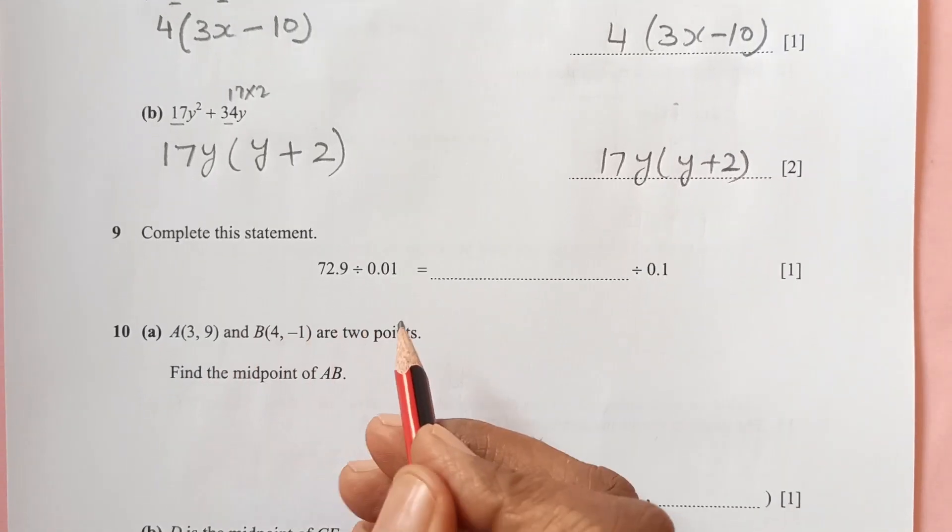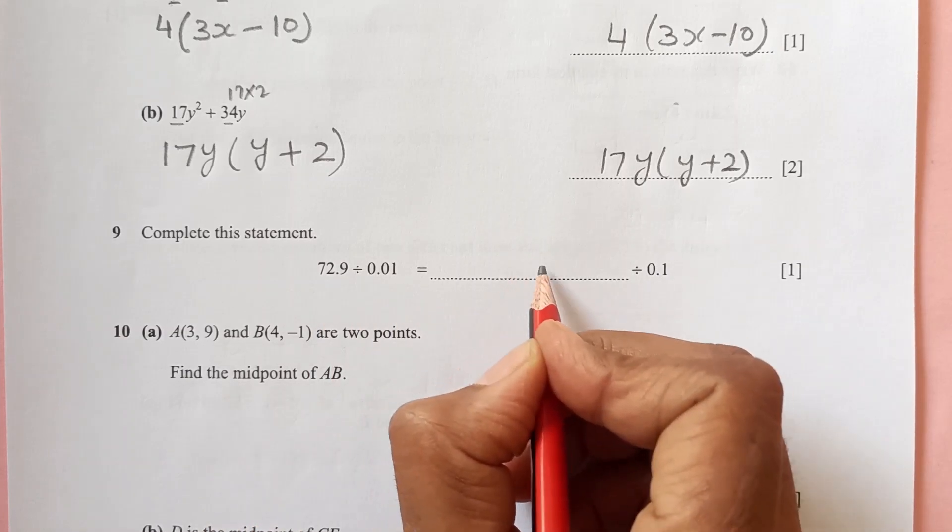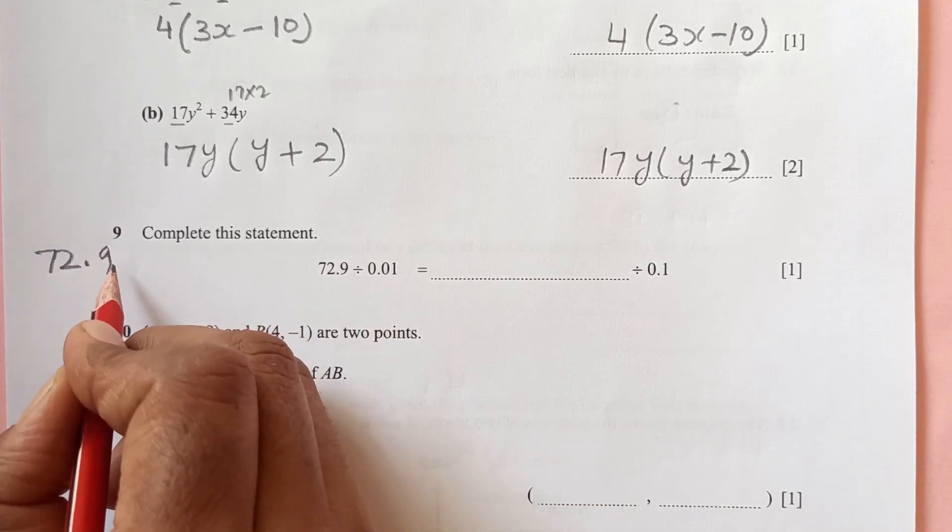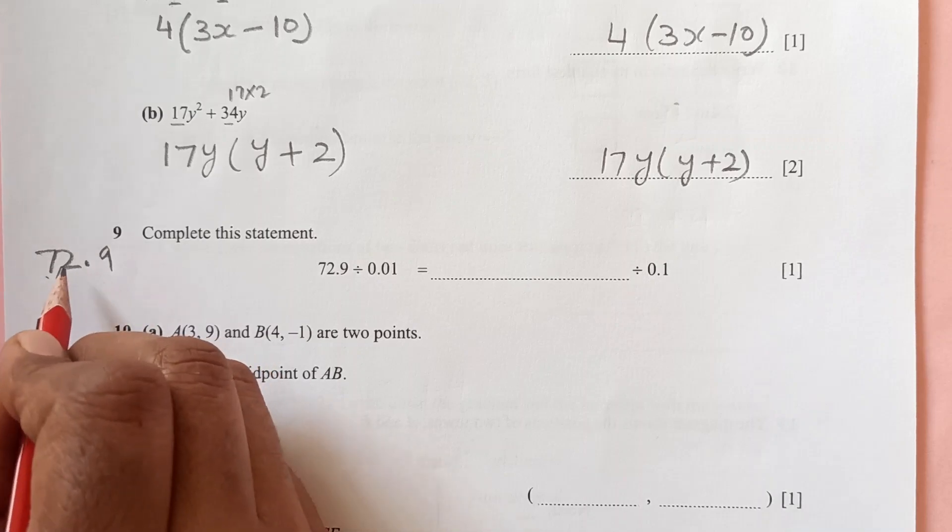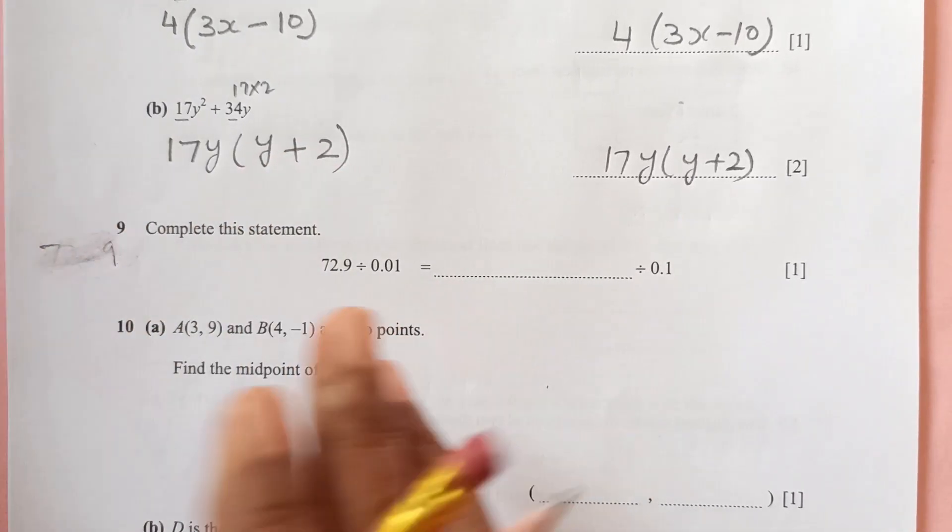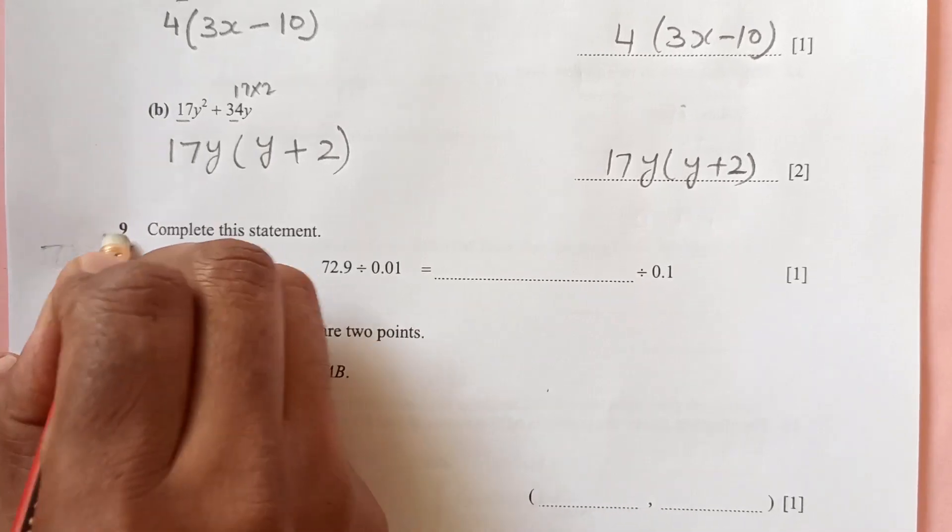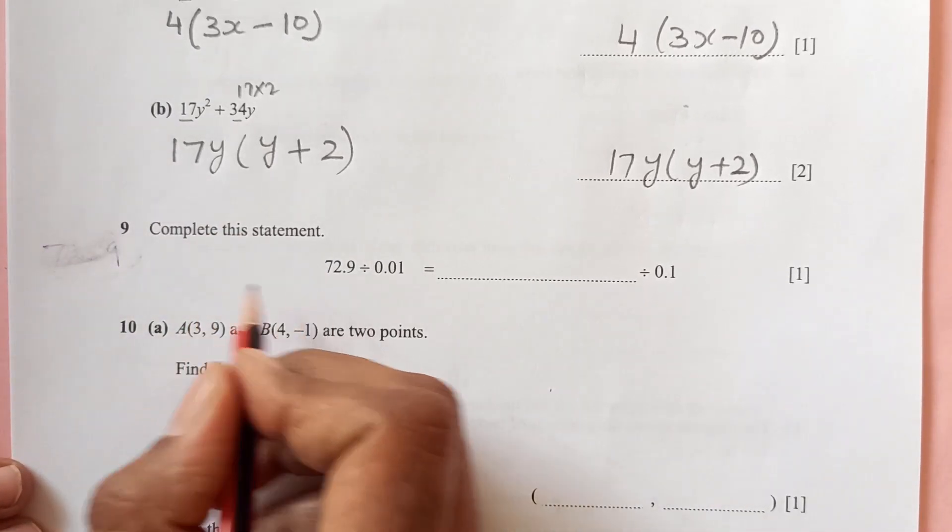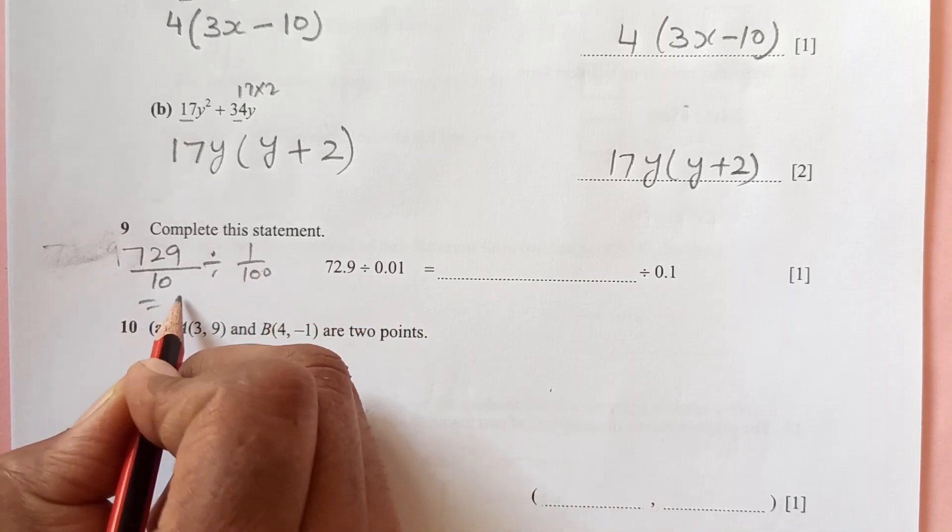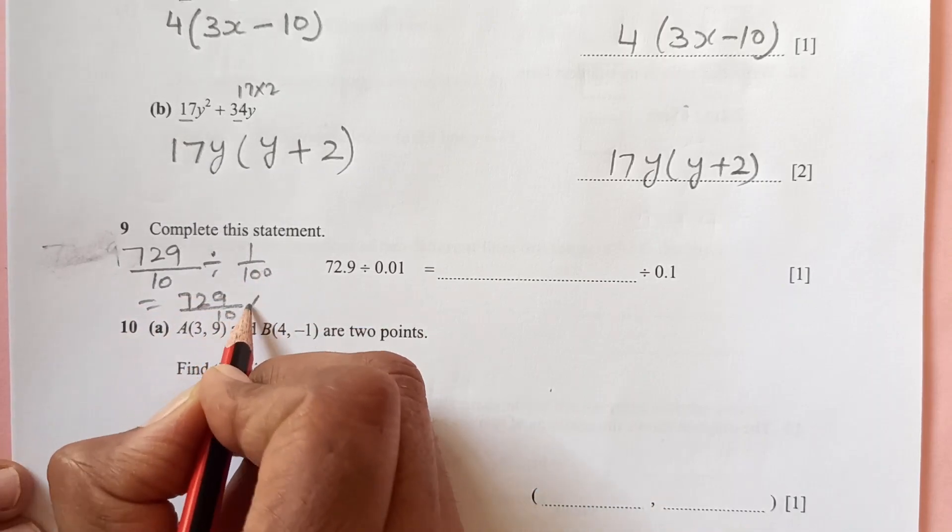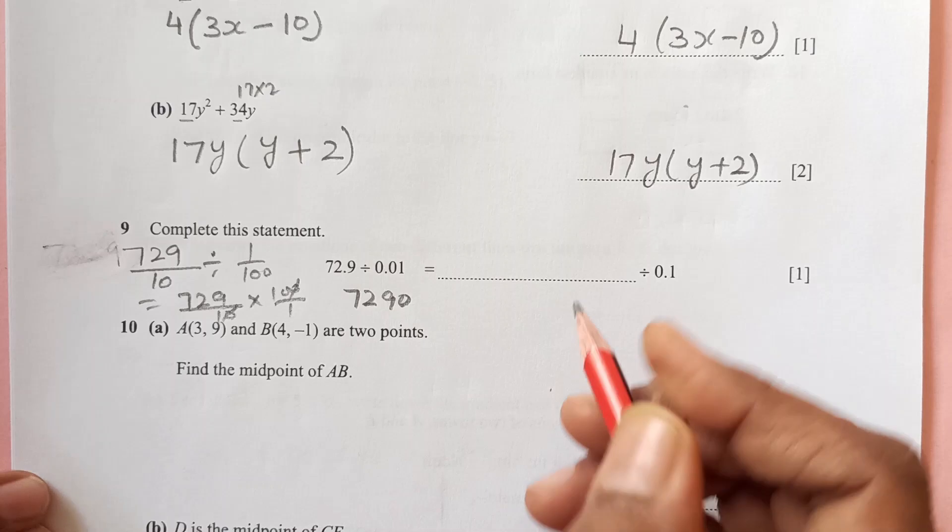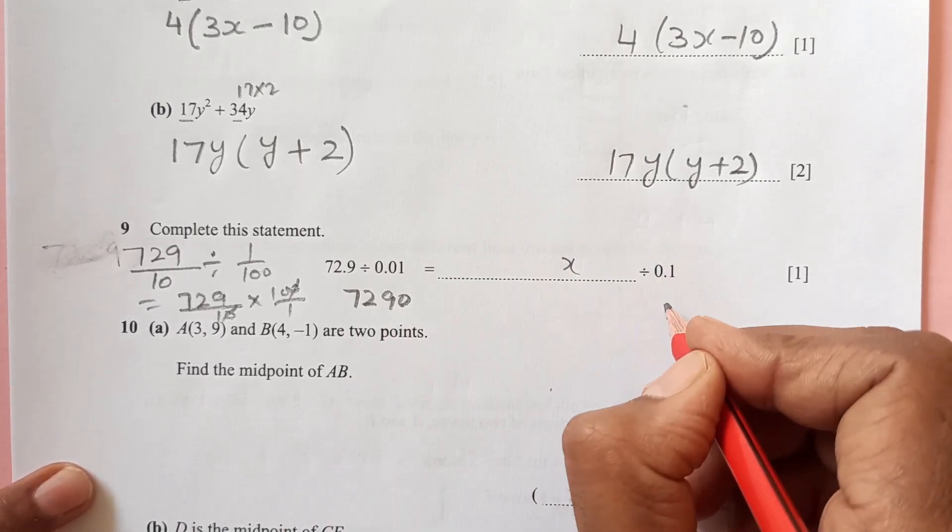Number nine: complete this statement. We have these two values. 72.9 can be written as 729 over 10 divided by 1 over 100, so that means 729 over 10 times 100 over 1, so this and this is gone, so the answer is 7290.